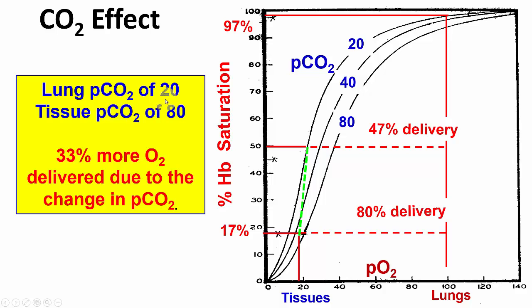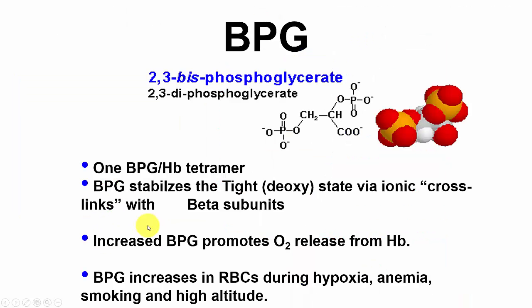So with lung PCO2 of 20 and tissue PCO2 of 80, we get 33% more O2 delivered due to the change in PCO2.